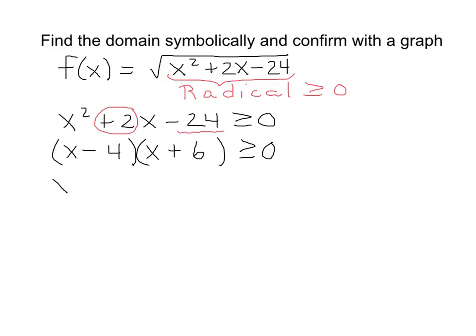So now we'll take each factor and set it equal to zero and solve. We're just trying to find the numbers that they change signs at. So we get 4 and -6.